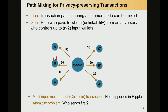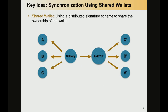So what we did is a protocol to perform atomic transactions between several senders and several receivers. The first step is to define a shared wallet. A shared wallet is defined here with a circle of three letters, where the letters define the participants. The signing key for the shared wallet is created with a distributed key generation, so each participant has a share of the signing key.